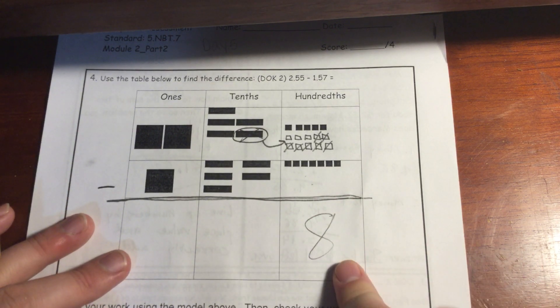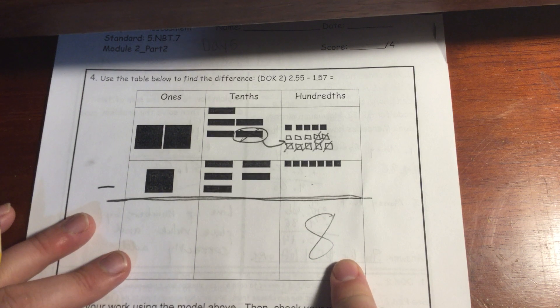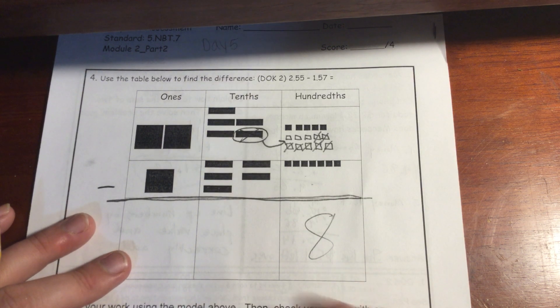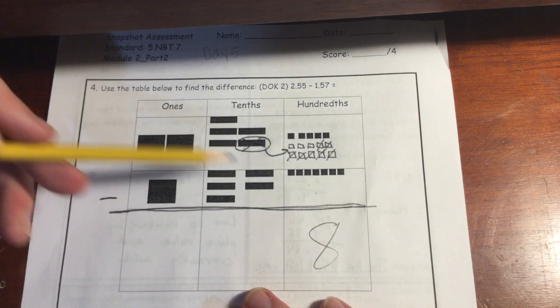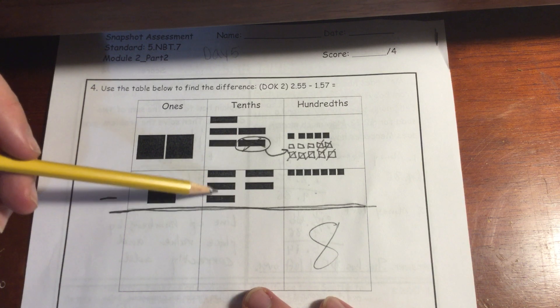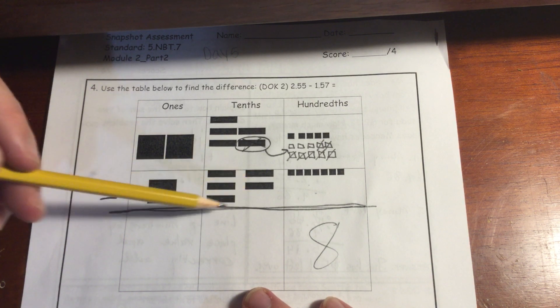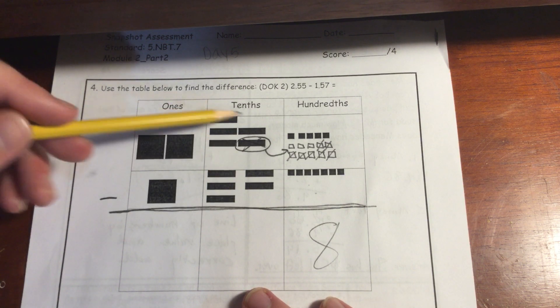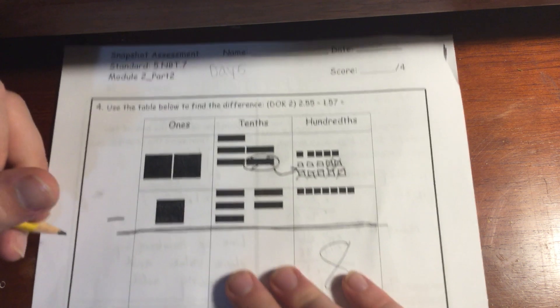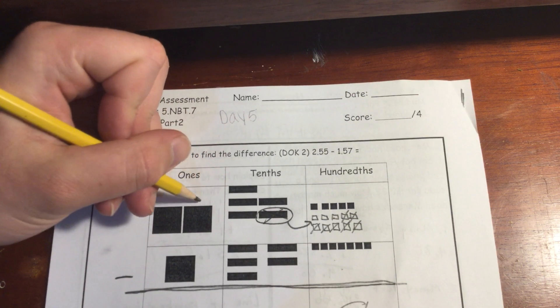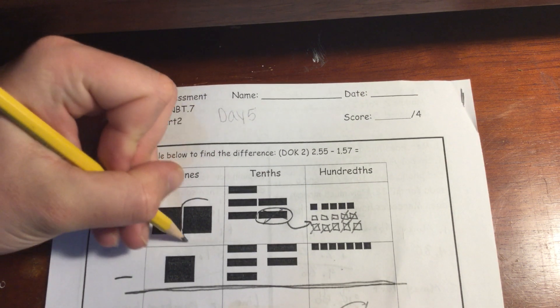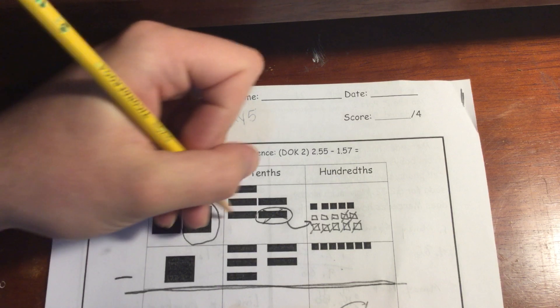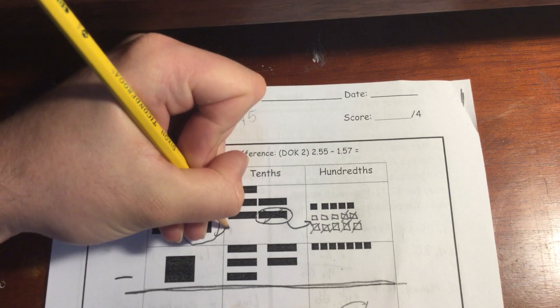And I'm going to write it out just in numerical form down here underneath my hundredths. So my next thing I'm going to do is I'm going to see, I have one, two, three, four, five right here. I have 5 tenths. But I only have 4 tenths now that I could take away from. So I'm going to do the same thing. I'm going to go one place value larger. And he's going to go to the next place value.